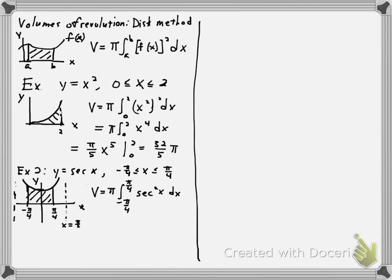That antiderivative is tangent. So this equals pi times tangent of x, where limits of integration are minus pi over 4 and pi over 4. This equals pi times tangent of pi over 4 minus tangent of minus pi over 4.